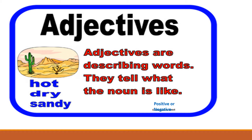Another example: the day was dry. Dry is the quality of day — it is describing the day. So day is the noun and dry is its adjective.